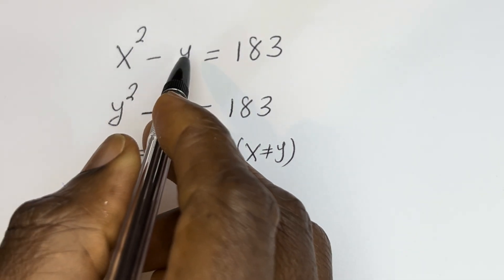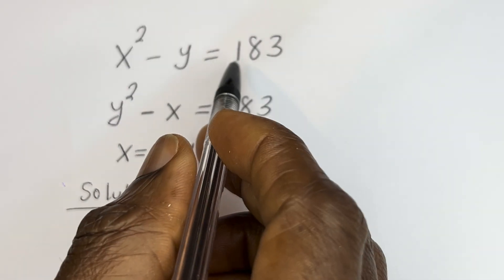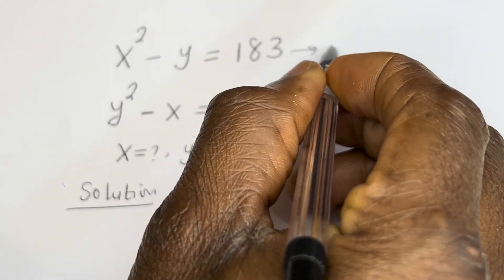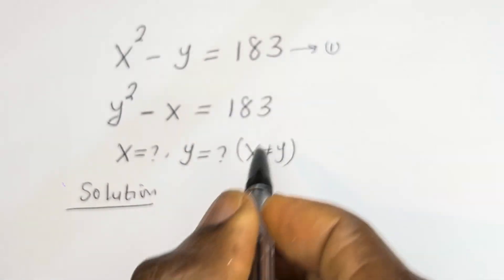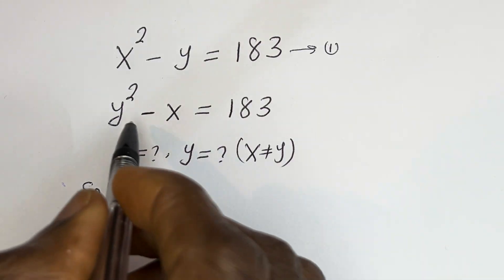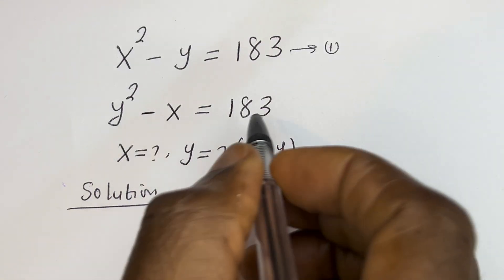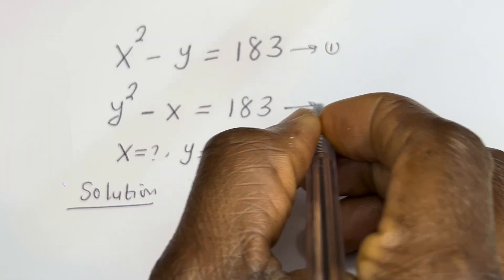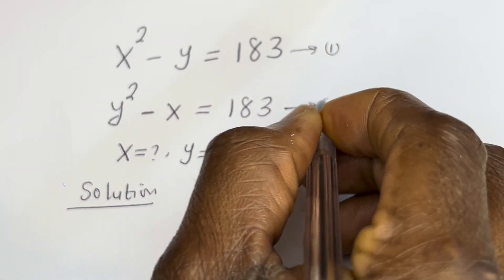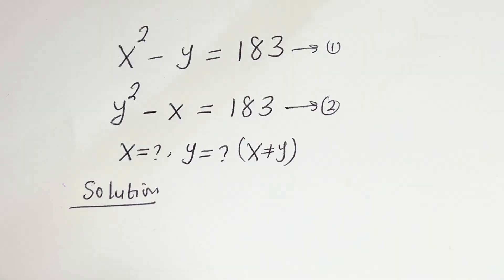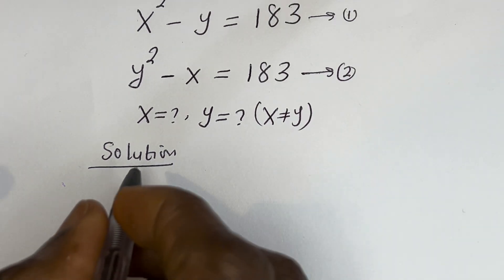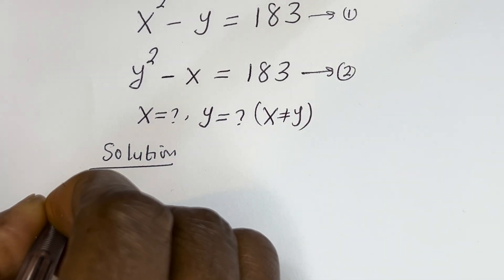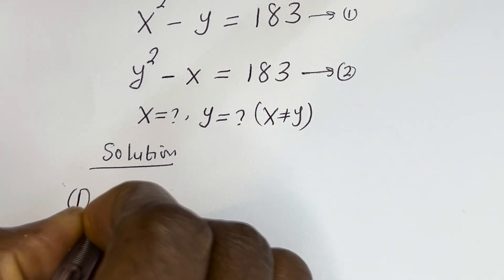s squared minus y is equal to 183 — let's call this equation 1. y squared minus s is equal to 183 — let's call this equation 2. Then let's subtract equation 1 from equation 2.